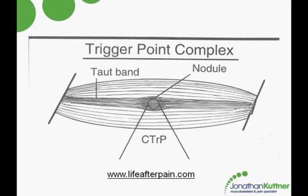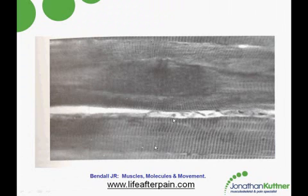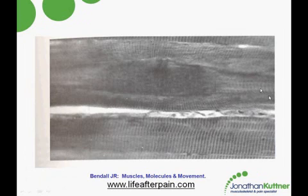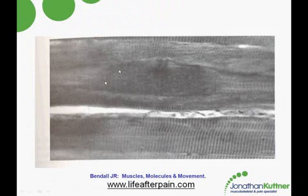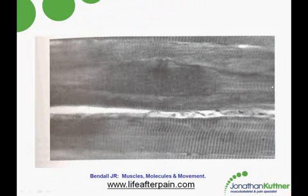If you look even more closely, what you can see here are normal muscle fibers. This is a photo micrograph. These are striations — you can see them, little stripes. That's normal. Over here you see this band — this is a little trigger point complex. What's happened is that everything has contracted in, so you can hardly see those little striations. And over here, they've been stretched. These are actually very tiny.